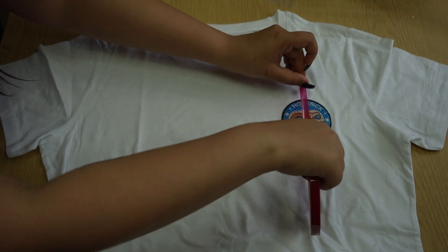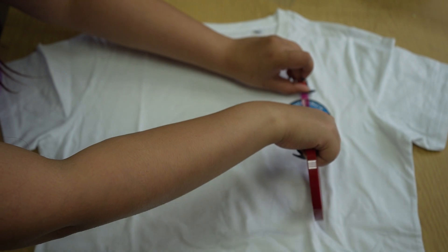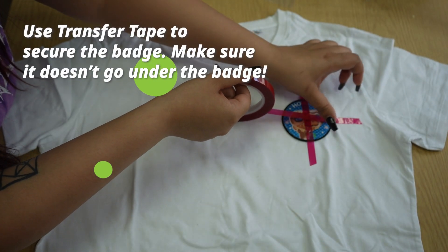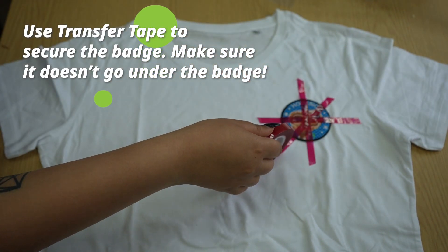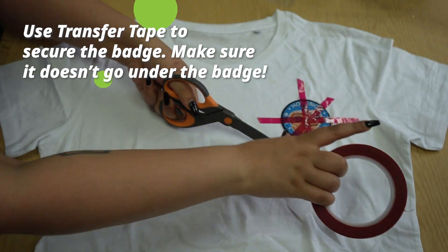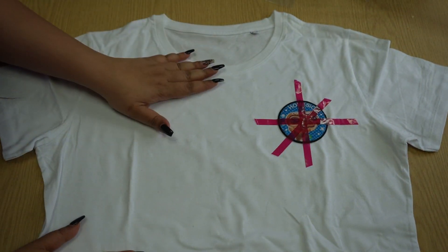Now I'm just cutting up some transfer tape to secure the badge to my t-shirt. You can use as much or as little tape as you like. Just make sure none of it goes under the badge. I've been guilty of that a couple of times.